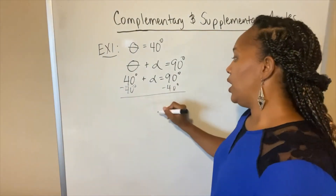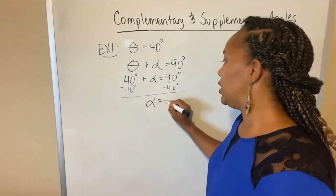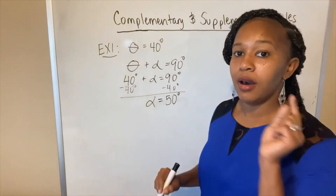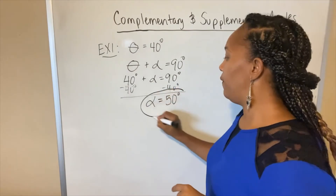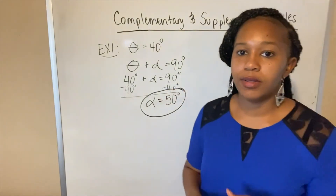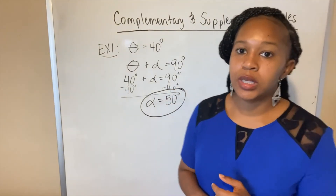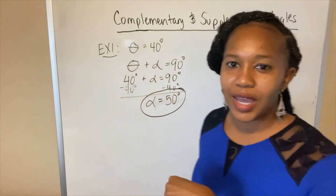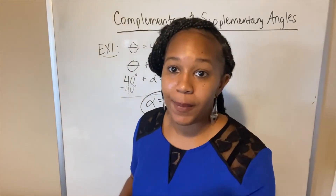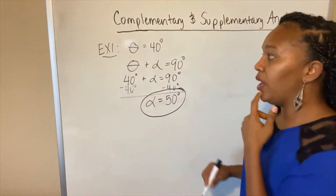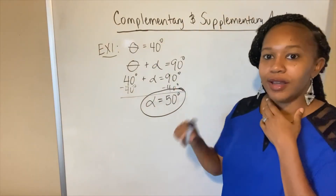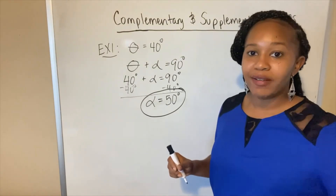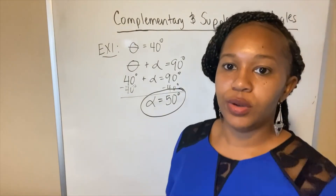40 plus 50 gives you 90 degrees. If you didn't know that off the top, you can solve it algebraically by subtracting 40 degrees from both sides, which tells you alpha equals 50 degrees. So the complement of 40 degrees is 50 degrees. I called the given angle theta and just picked alpha for the complement — you don't have to name them that way, it's just one approach.